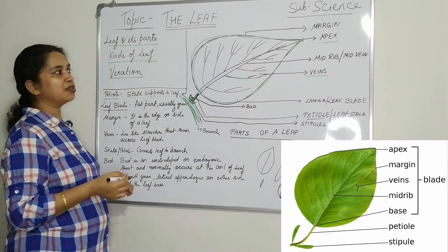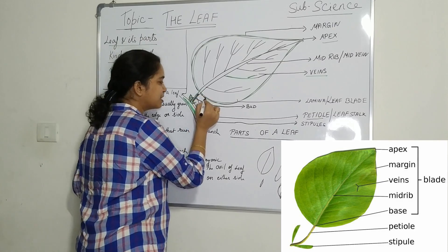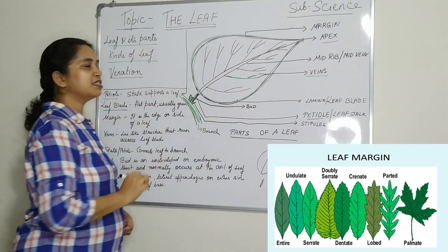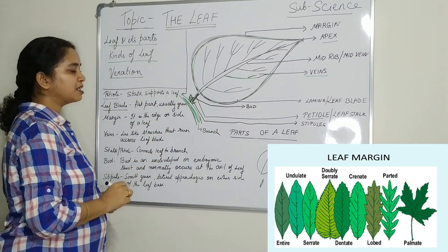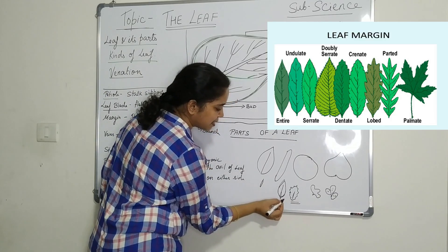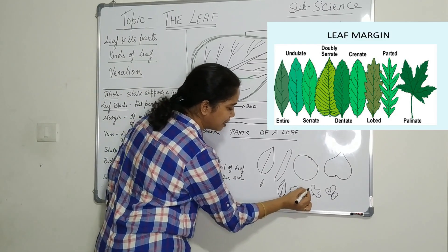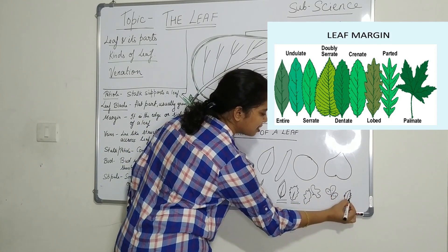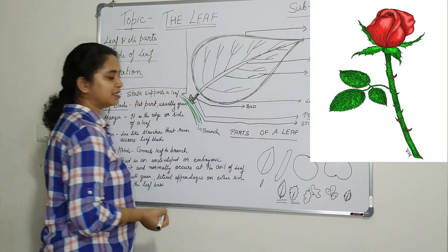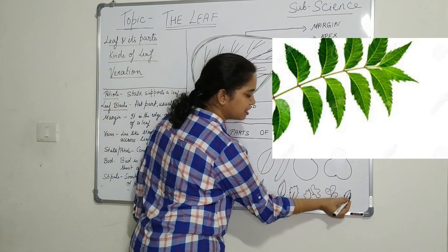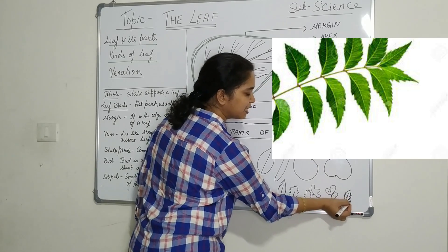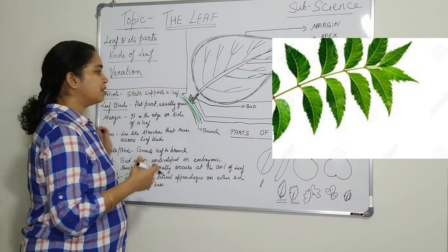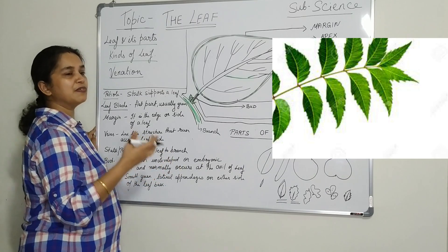The next part is the margin. The outer edge of the leaf is called the leaf margin. Some leaves have smooth margins, some have wavy margins. As you might have seen in the rose plant, they have a teeth-like structure — this is called an incision. The margins have incisions in them. Different leaves have different types of margins.